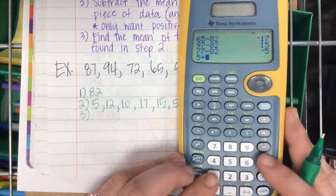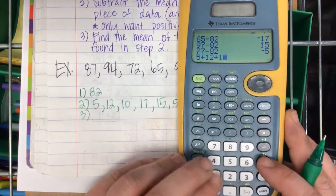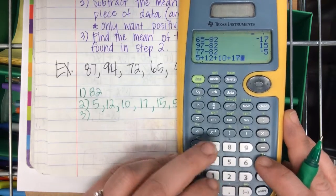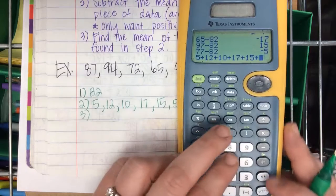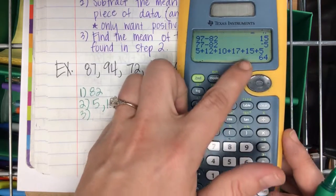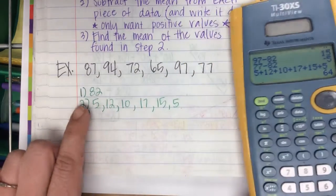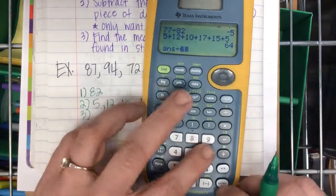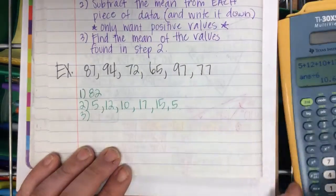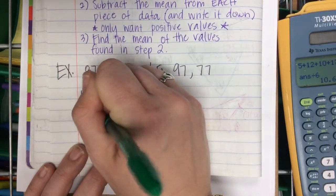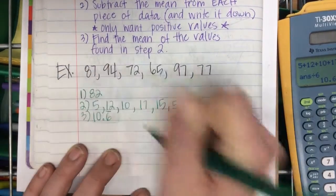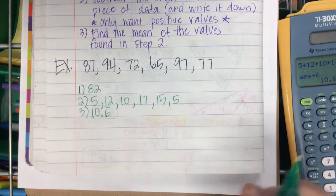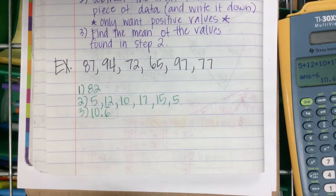So 5 plus 12 plus 10 plus 17 plus 15 plus 5 is 64 divided by 1, 2, 3, 4, 5, 6. So it's 10.6 repeating. The calculator rounds that 7 for you.